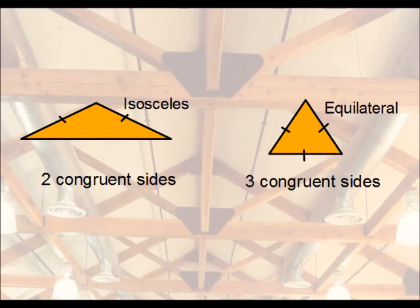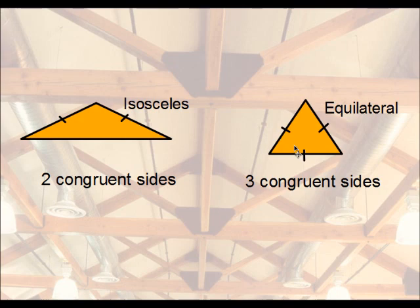An equilateral triangle is when all three sides are congruent, and here you can see that all three sides are marked. Note that with an equilateral triangle, it can only be drawn one way. Notice that each of the angles are acute.